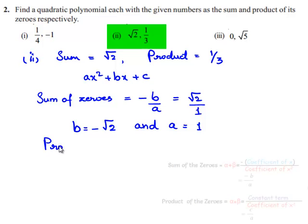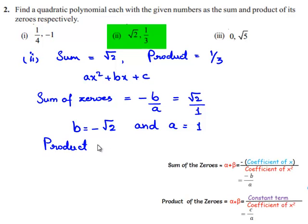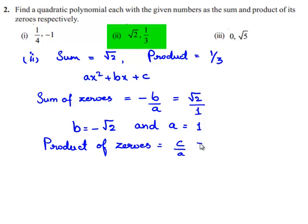Also, we know that the product of zeros is equal to C by A, which is the product given to us, 1 by 3. So we can say that C is equal to A by 3. We have found the value of A to be 1, so C is 1 by 3.